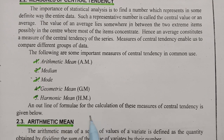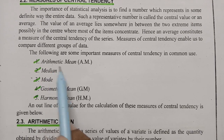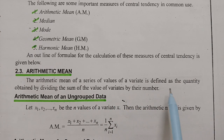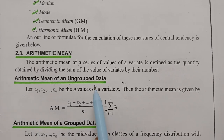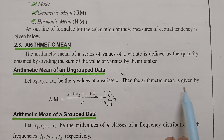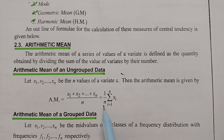An outline of the formulae for calculation of these measures is given below. The first one is the arithmetic mean (AM). The arithmetic mean of a series of values of a variate is defined as the quantity obtained by dividing the sum of the values of the variate by their number — so it is an average. For ungrouped data, if X1, X2, X3, ... Xn are the n values of the variate X, then AM = (X1 + X2 + X3 + ... + Xn) / n = Σ Xi / n.